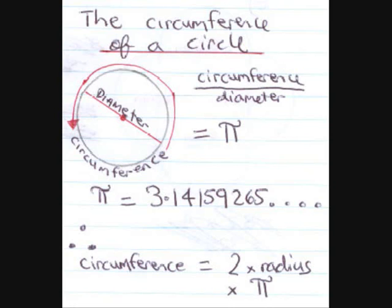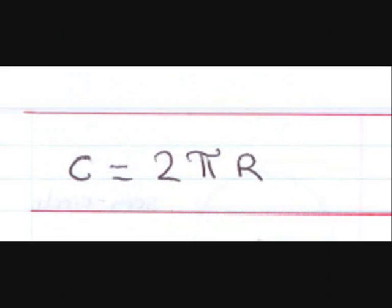It's a number that never stops. It's a transcendental number. But what we can do, we can use the pi to work out the circumference. So two times the radius times pi will give us the circumference. Therefore, the circumference equals C equals two pi r.